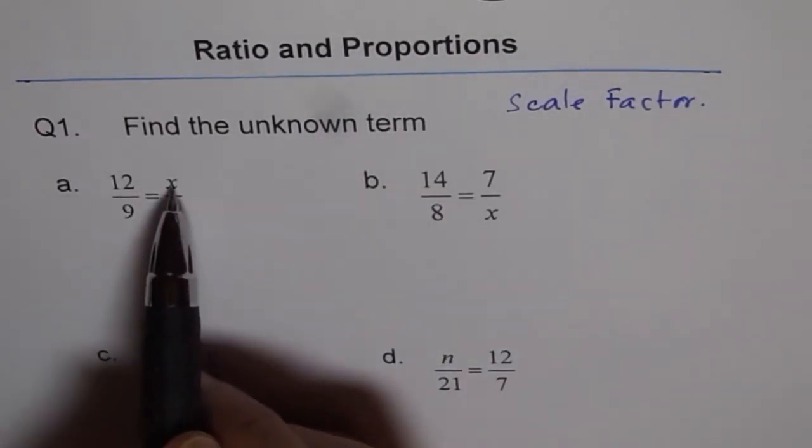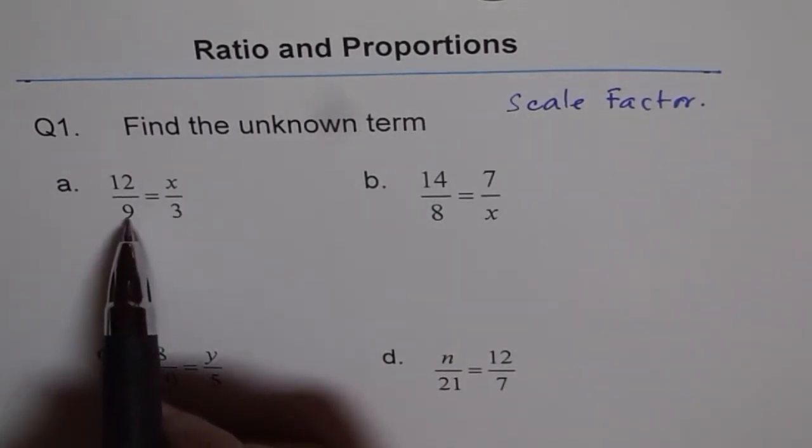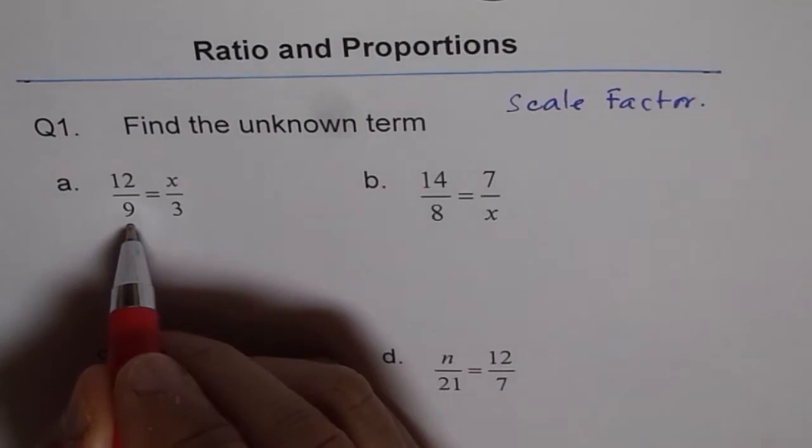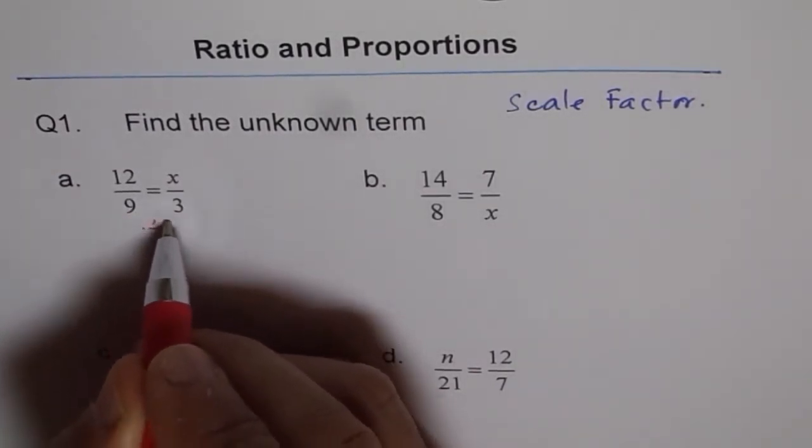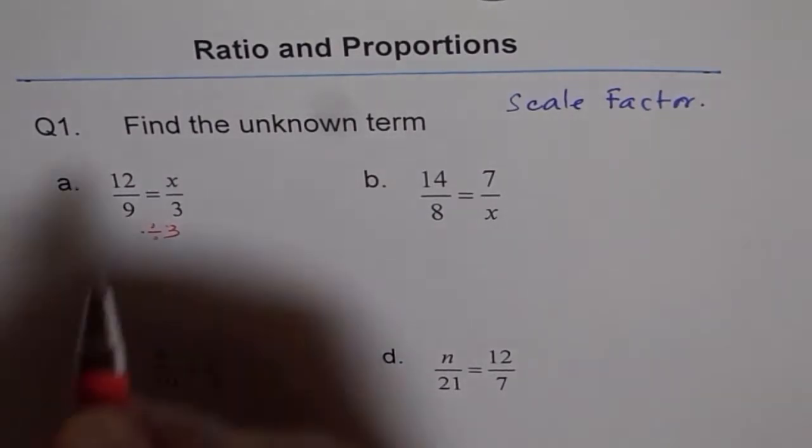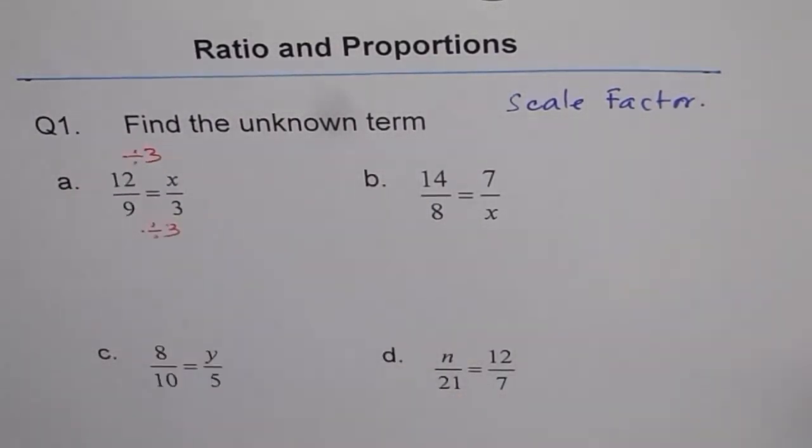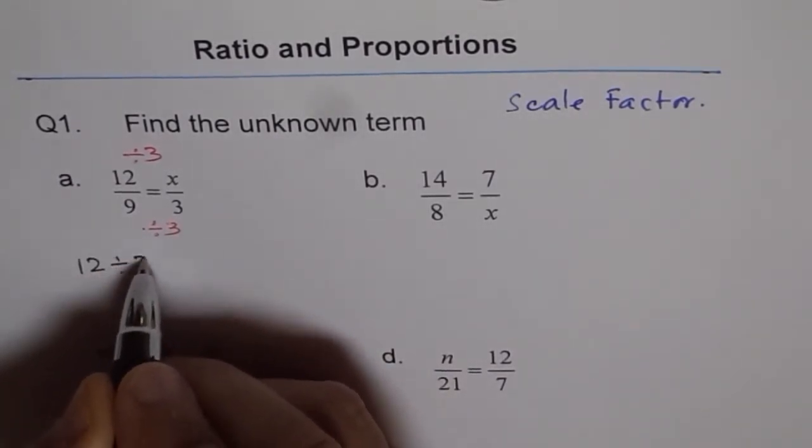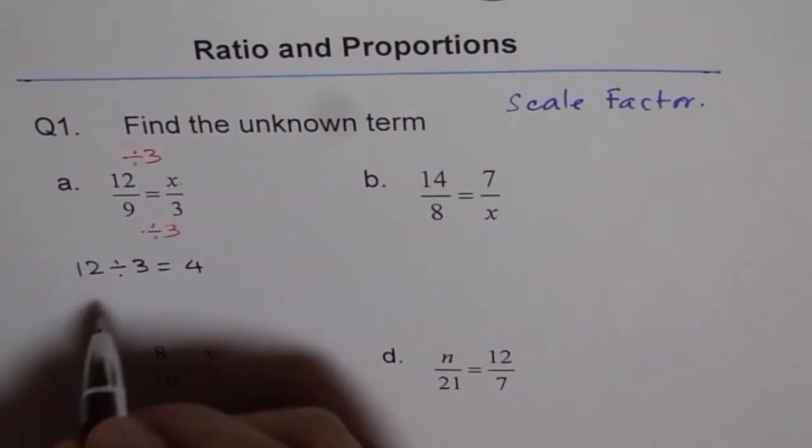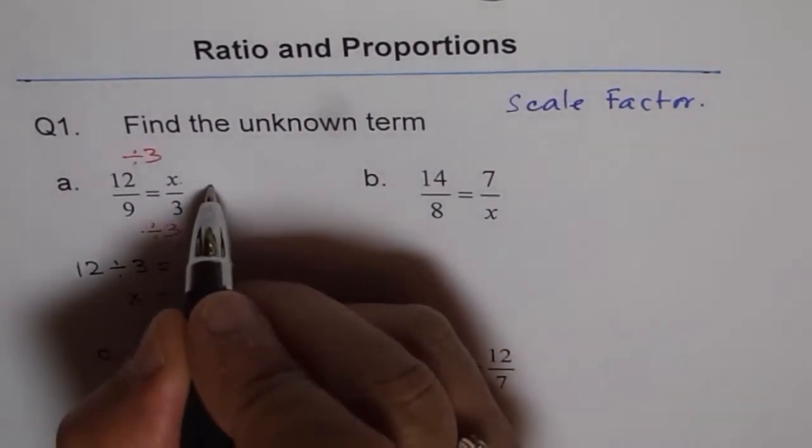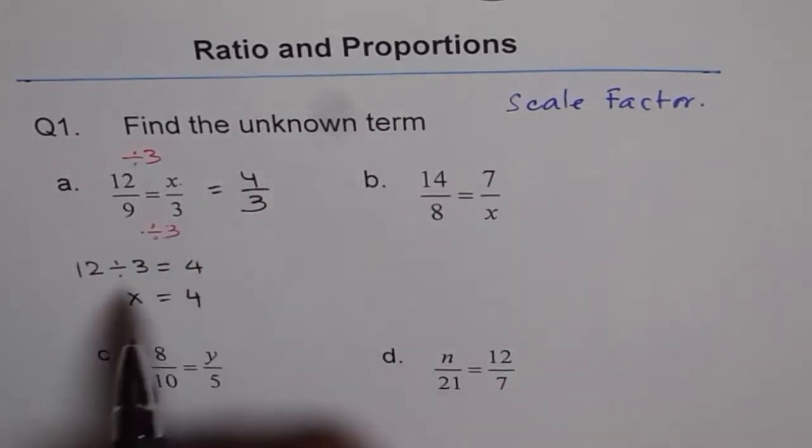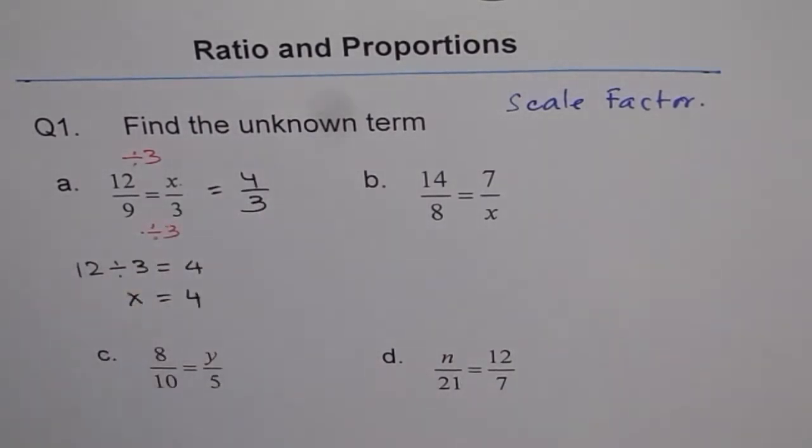How do we find x? We are given the relation between 9 and 3. To get from 9 to 3, we divide by 3—that's our scale factor. Similarly, let's divide 12 by 3. 12 ÷ 3 = 4, so x = 4. We can write this as 4/3. 12/9 = 4/3, so x = 4.